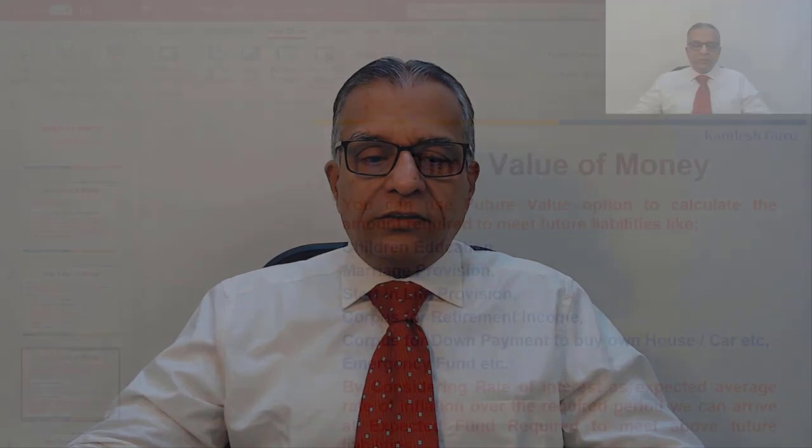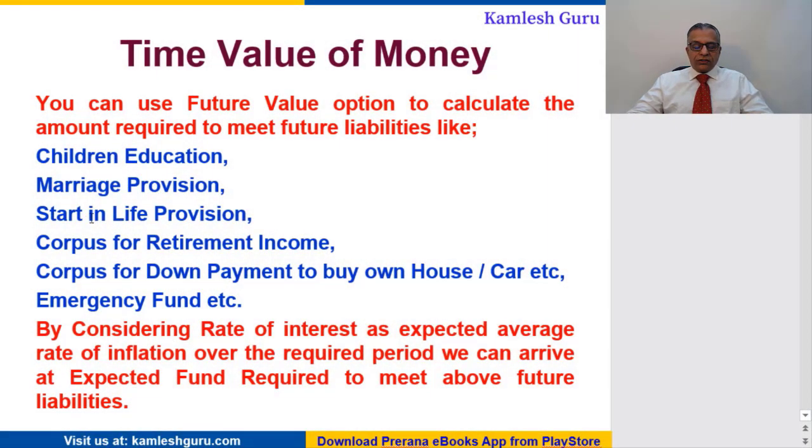This is how we calculate future value. Now we see how to use this future value calculation to arrive at the amount required to fulfill our future liabilities. Our future liabilities are children's education, marriage provision, start-in-life, corpus for retirement income, corpus for down payment to buy a house, and corpus for emergency fund. Here, the rate of interest is treated as the rate of inflation.